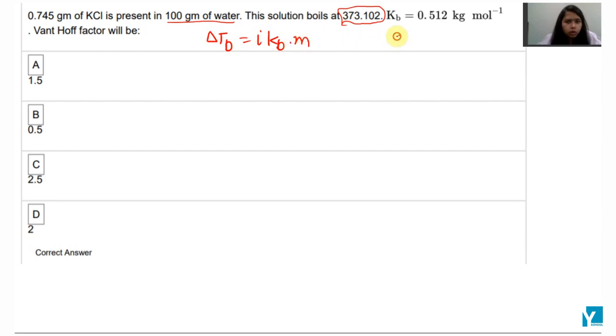Now normal boiling point is 100 degree Celsius. So how much more than 373 Kelvin is this? 0.102 right.